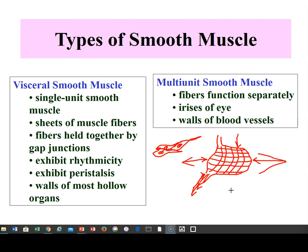Multi-unit smooth muscle fibers function separately. The irises of the eye and the walls of blood vessels work this way. In the iris, there are two different sets of smooth muscles running in two different directions — circular fibers and radiate fibers. When these contract together, they act like a shutter in a camera to constrict or dilate the pupil. This is called the photopupillary response.